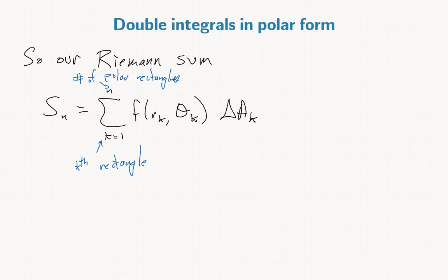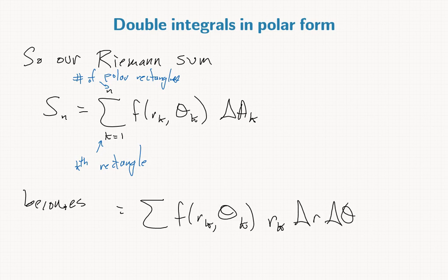This becomes sum f(r_k, theta_k), and now we found that delta A_k is r_k delta r delta theta. As the number of polar rectangles goes to infinity, and also while making those rectangles have theta width and r width go to zero, so they get finer and finer...